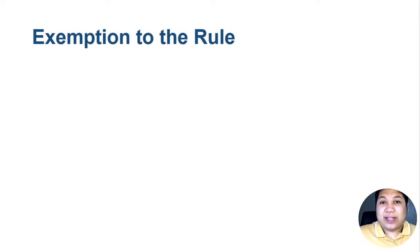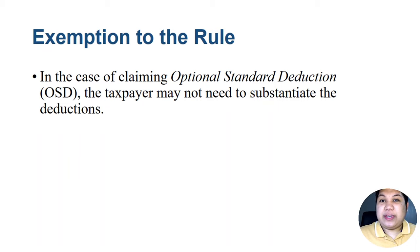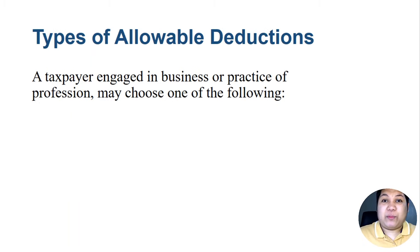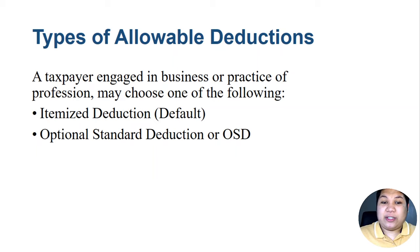There is an exception: when claiming optional standard deduction (OSD), the taxpayer may not need to substantiate the deductions. The substantiation rule applies only when claiming itemized deductions. There are two types of allowable deductions a taxpayer engaged in business or practice of profession may choose: itemized deduction, which is the default, and optional standard deduction (OSD).